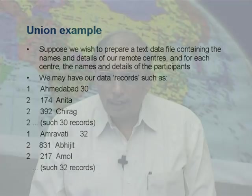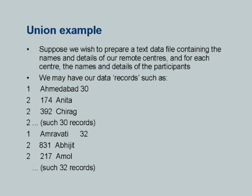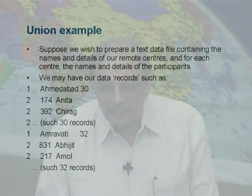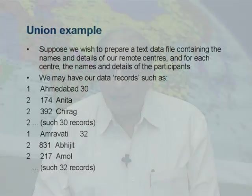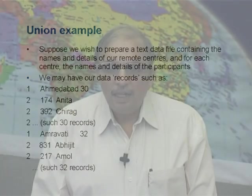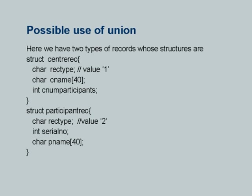So Ahmedabad 30 and Amaravati 32 both have record type 1, while participant records have record type 2. A participant record reads as: 2, enrollment number, name. To describe these, I could define two different structures: struct center_rec with char rec_type, char cname[40], and int cnum_participants; and struct participant_rec with char rec_type, int serial_no, and char pname[40].